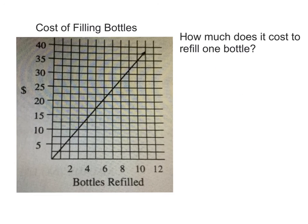Our final example will show you how to find the unit rate from a graph. If I take a look at this graph, I see that it's showing me the cost of filling bottles. On the x-axis, we have the bottles refilled. On the y-axis, we have the cost. So normally, if I'm looking for the unit rate on a graph, I'm trying to figure out what the y value is when my x value is 1. So on this graph, I'd be looking right about here.